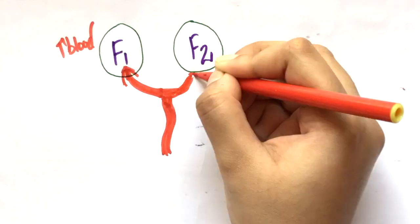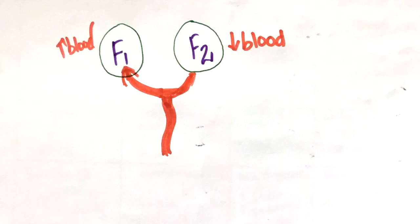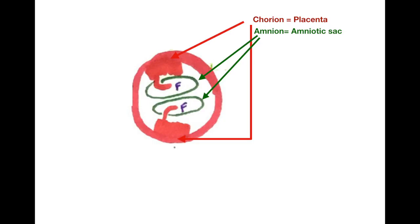One twin receives a lot of blood while the other twin receives very less blood. This is rare in dichorionic pregnancies because the placentas are separate, hence the blood supply is also separate.